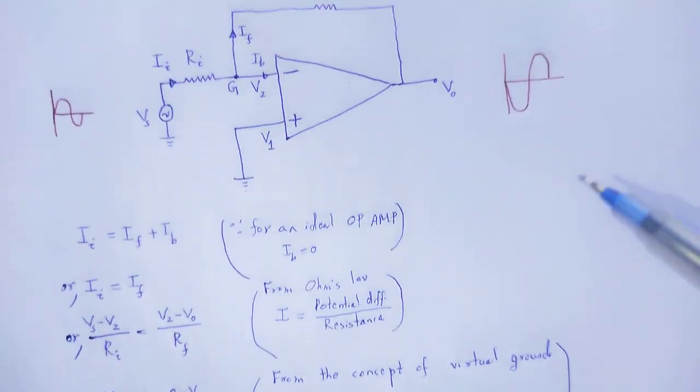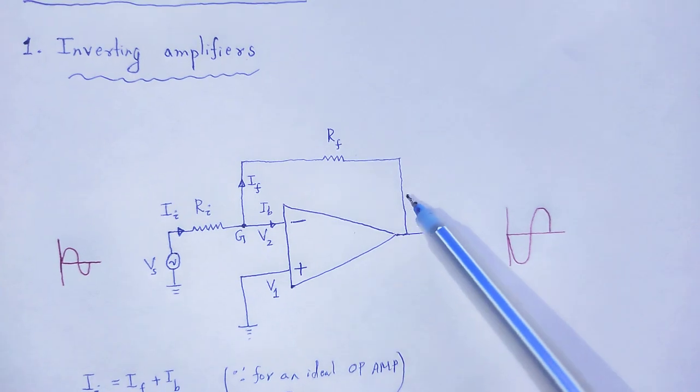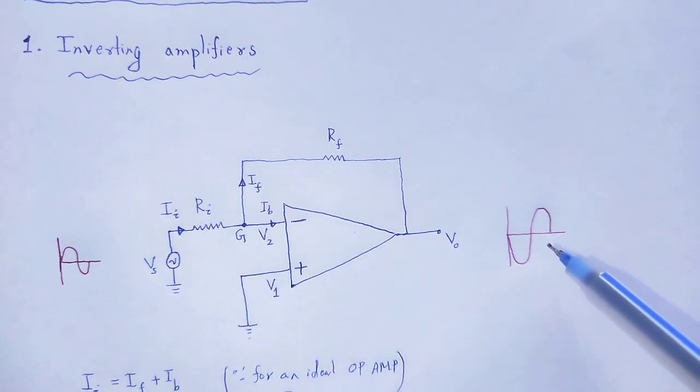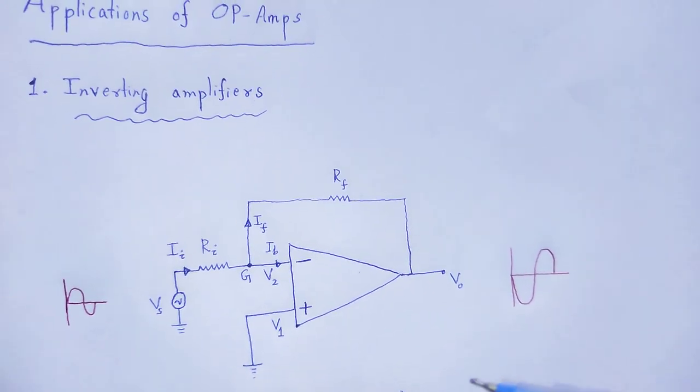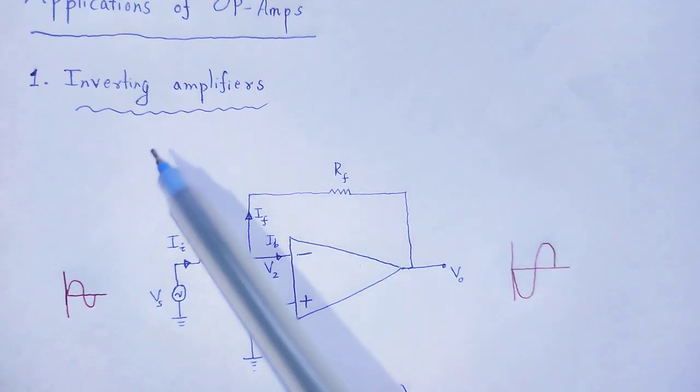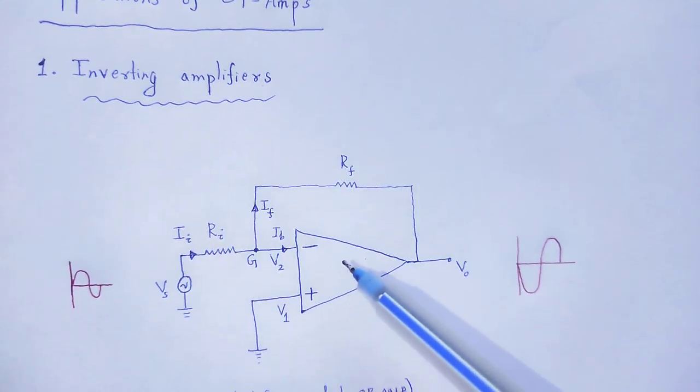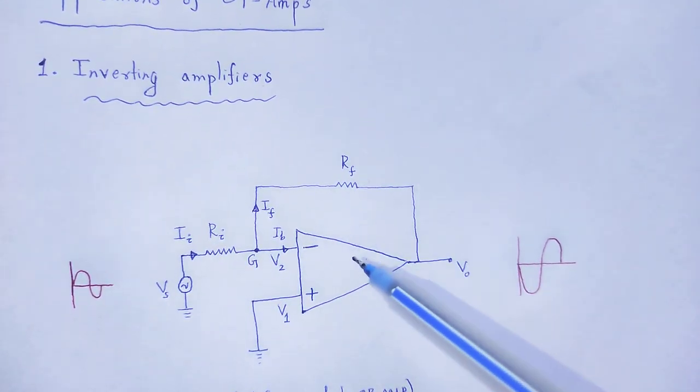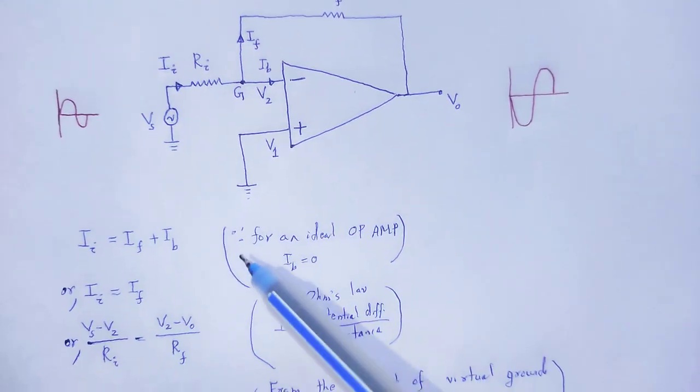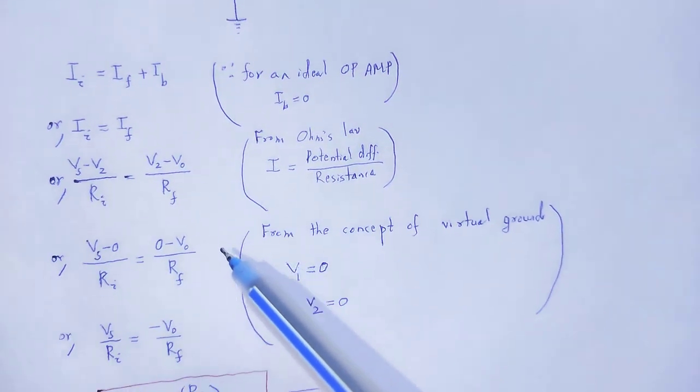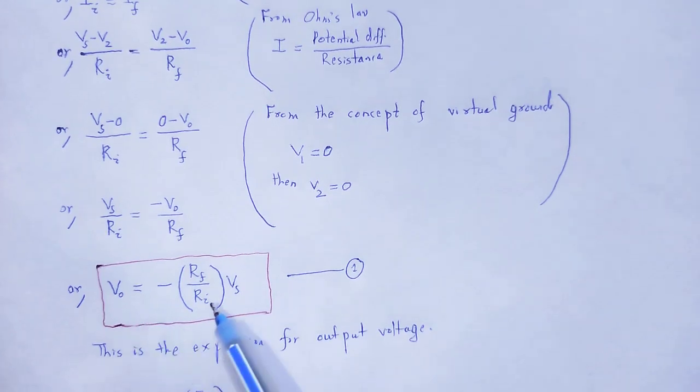So by using an op-amp, we create an inverting amplifier. With the help of this video lecture, we understand how an inverting amplifier is created by using an op-amp.